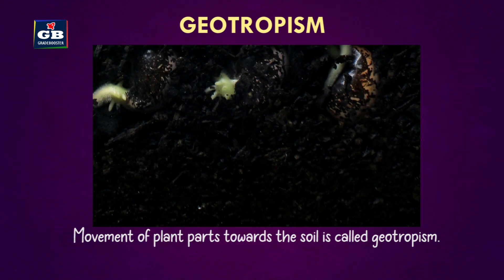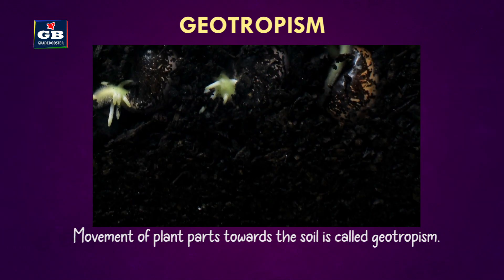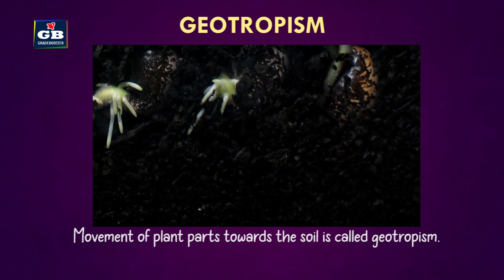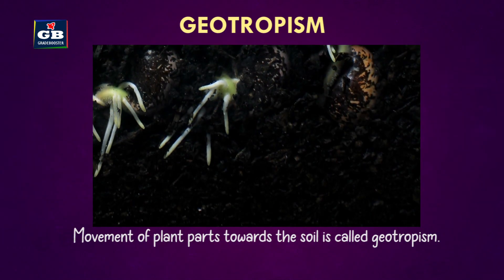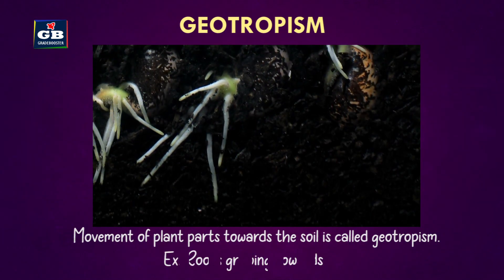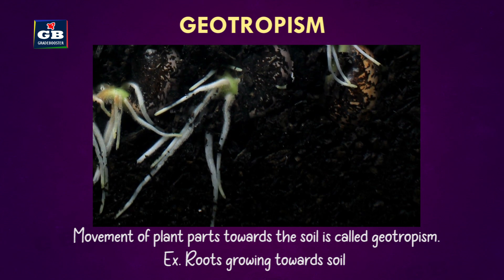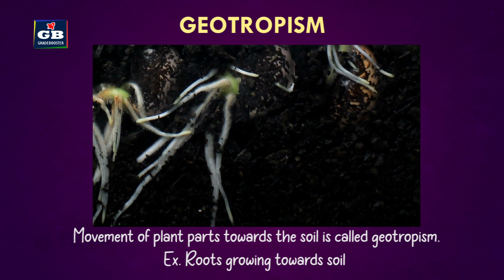Movement of plant parts towards the soil is called geotropism. For example, roots growing towards soil.